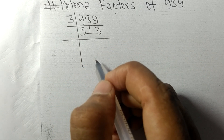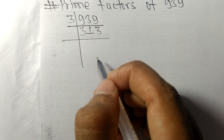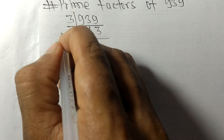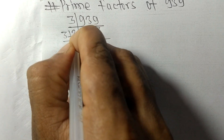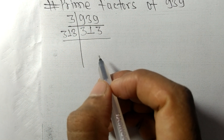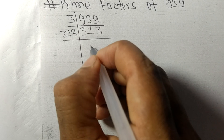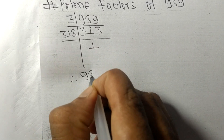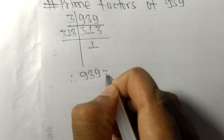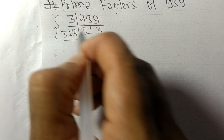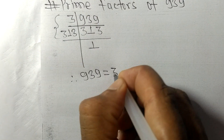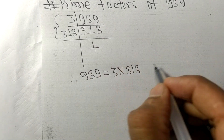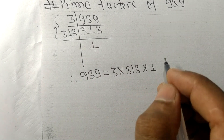Now we get 313, which is a prime number, so it is exactly divisible by 313 only. On dividing we get 1. Therefore 939 equals 3 times 313.